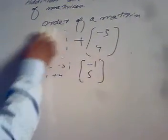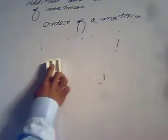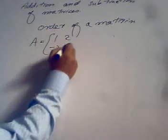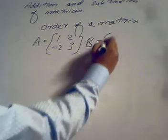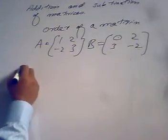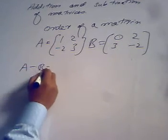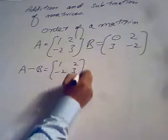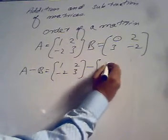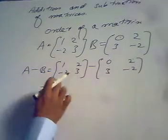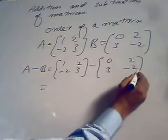Subtraction is done in the same manner, but we change the signs of the second matrix. Suppose matrix A is [1, 2; -2, 3] and matrix B is [0, 2; 3, -2], and we want to compute A minus B. We write the values of A as [1, 2; -2, 3], place a negative sign, then write B as [0, 2; 3, -2]. Since the orders are the same, we can proceed with the subtraction.